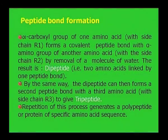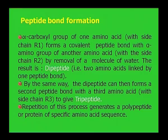Peptide bond formation. How is this peptide bond formed in the proteins? Peptide bond is formed by the alpha carboxylic group of one amino acid and the alpha amino group of another amino acid, and by this bond there is a removal of a molecule of water.